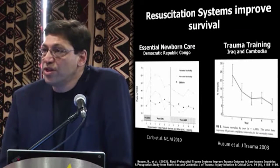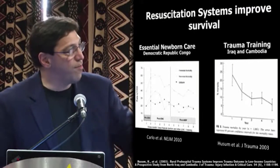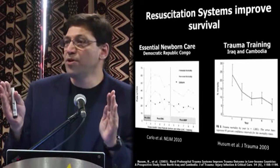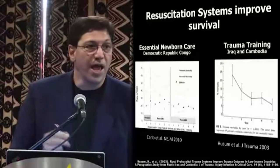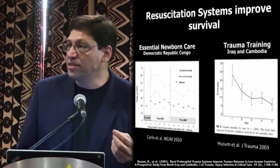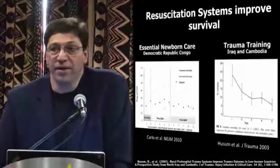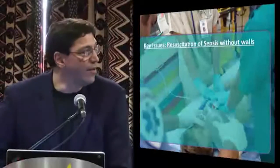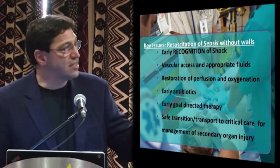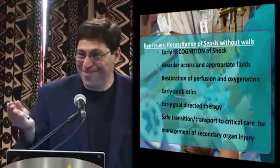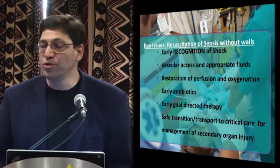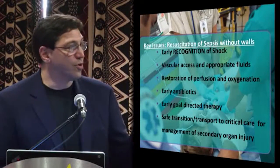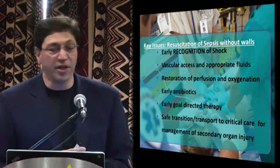In developing countries, programs such as essential newborn care and trauma training have been shown to decrease mortality over a short time period. If we can take some of these protocols and effectively implement them, there is evidence we can make a dent in sepsis care in the same way. The things that need to happen are: early recognition of shock, vascular access, and appropriate fluids — appropriate fluids in light of the Maitland article — restoration of perfusion and oxygenation, early antibiotics, early goal-directed therapy, and a safe transition or transport to definitive critical care for management of secondary organ injury.